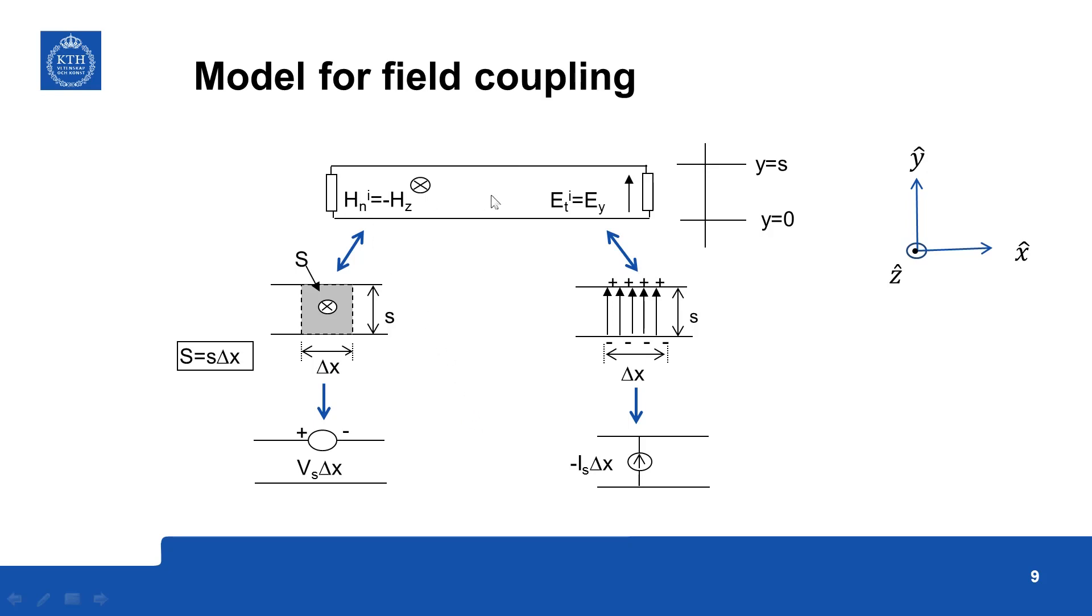So this is the development of the model. So you have a small component lead or transmission line with some loads, so the incident wave and it is separated by a distance s, so it is in the y direction y equal to 0 and small s.